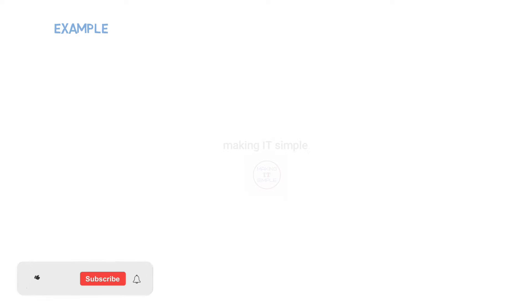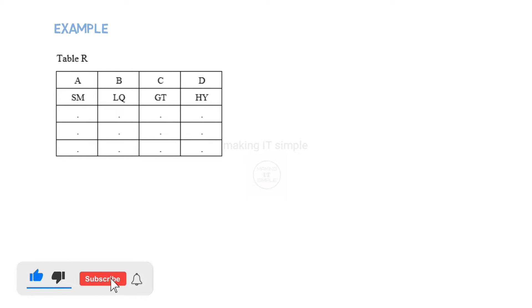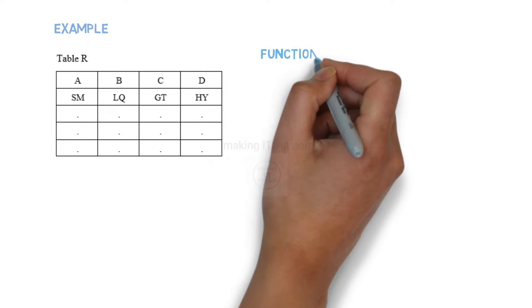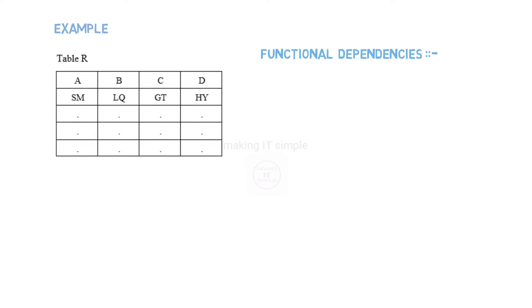Let us start with an example and then come to the theoretical definitions. Let's assume we have a relation or table R. It has four attributes: A, B, C, and D. This relation R has some functional dependencies as follows: by using A and B together we can identify D, and using attribute B we can find or identify C.